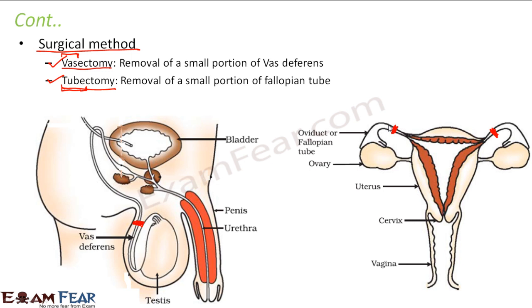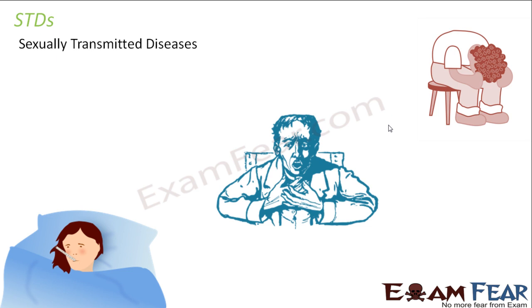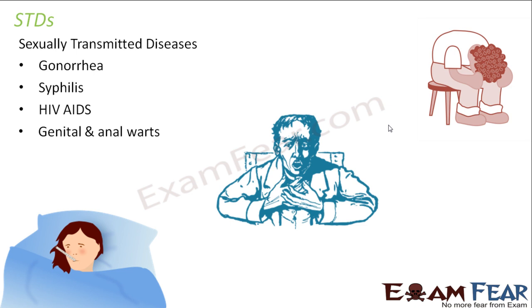Now let us talk about sexually transmitted diseases. There are quite a number of diseases which are infectious and spread from one person to another through sexual contact — when the penis of a male is inserted inside the vagina of a female. Some of these diseases include gonorrhea, syphilis, HIV/AIDS, and genital and anal warts. Gonorrhea and syphilis are caused by bacteria, and syphilis is curable to some extent with antibiotics.